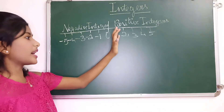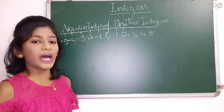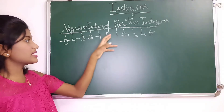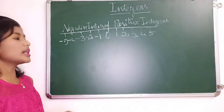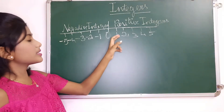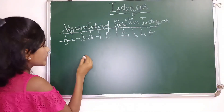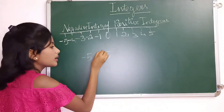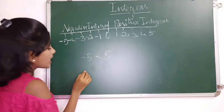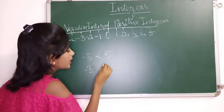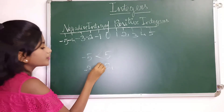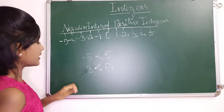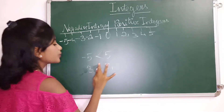Every right side number is greater than the left side numbers. That is, minus 1 is lesser than 0, and minus 2 is lesser than minus 1. 2 is greater than 1. For example, comparing minus 3 and 2: 2 is greater than minus 3.